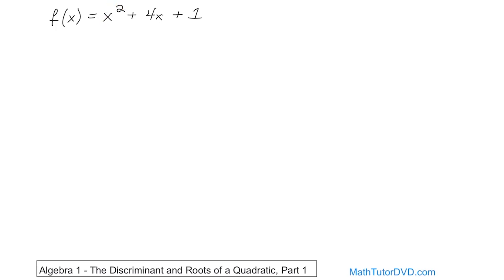By now we've been introducing this enough that you should know that pretty much every quadratic is going to look like a parabola of some kind. It's going to either be like this or it could be upside down, but it's going to look like a parabola. It's not going to look like a line because lines do not ever, ever have square terms in them.